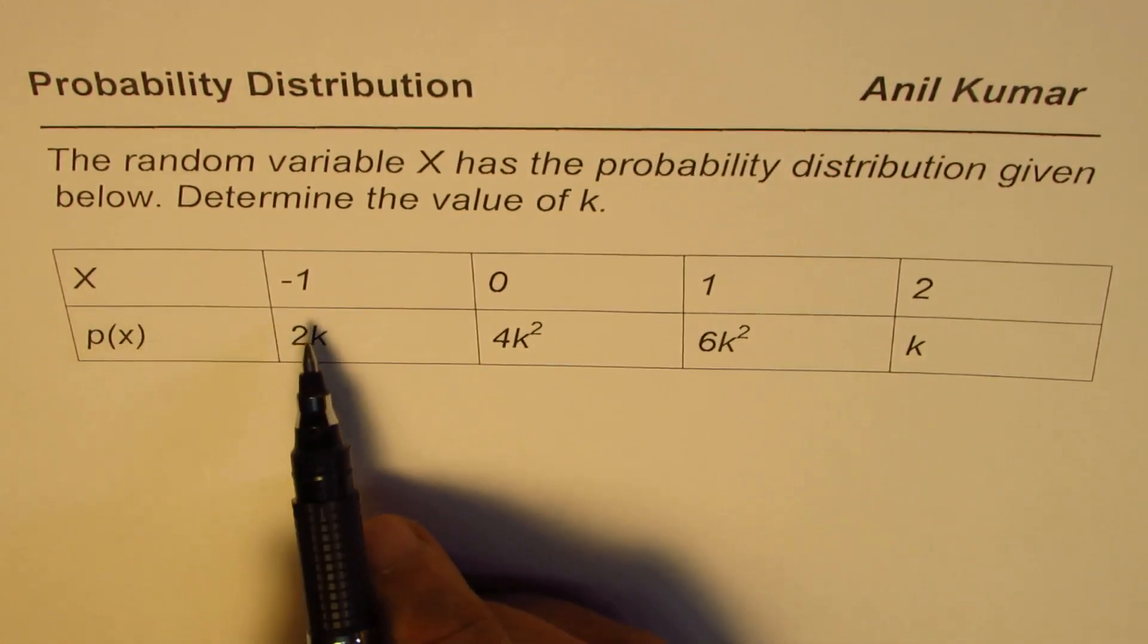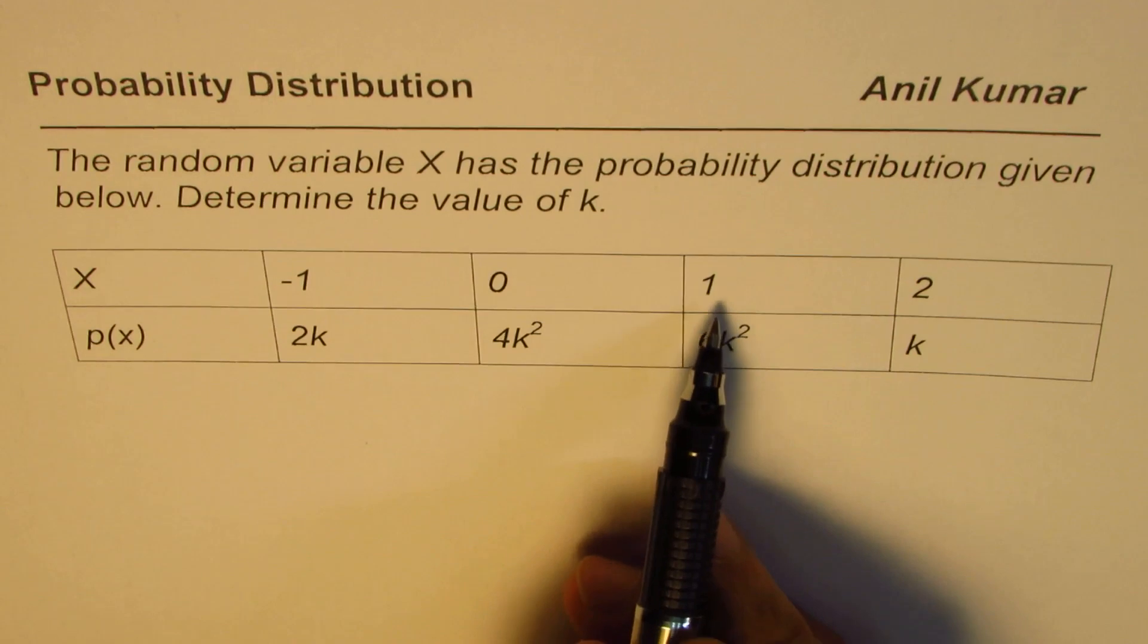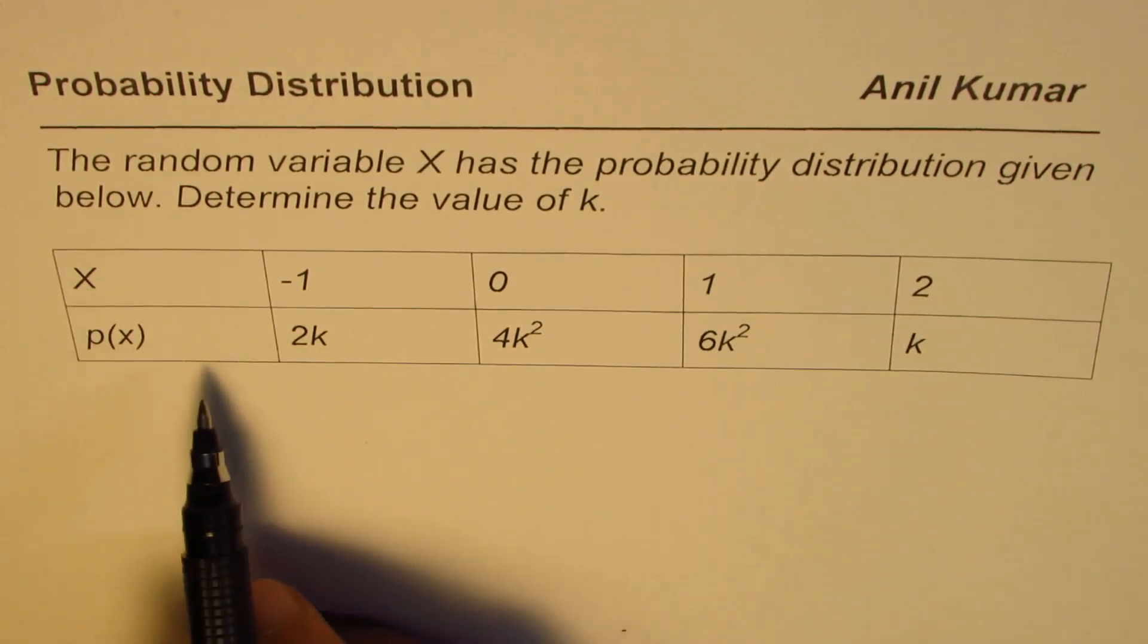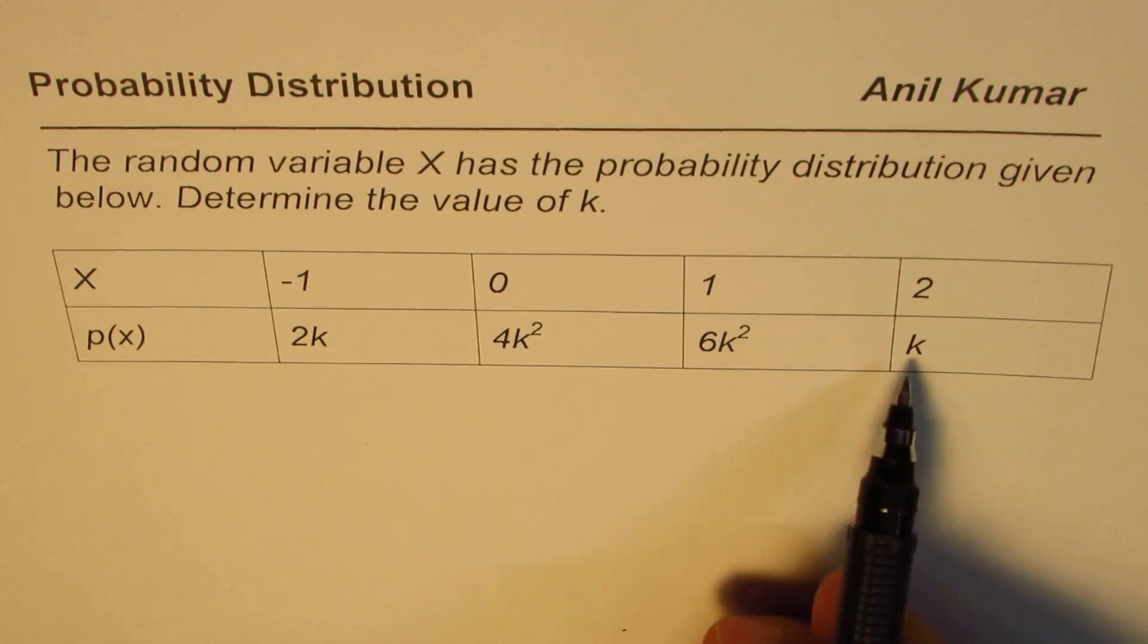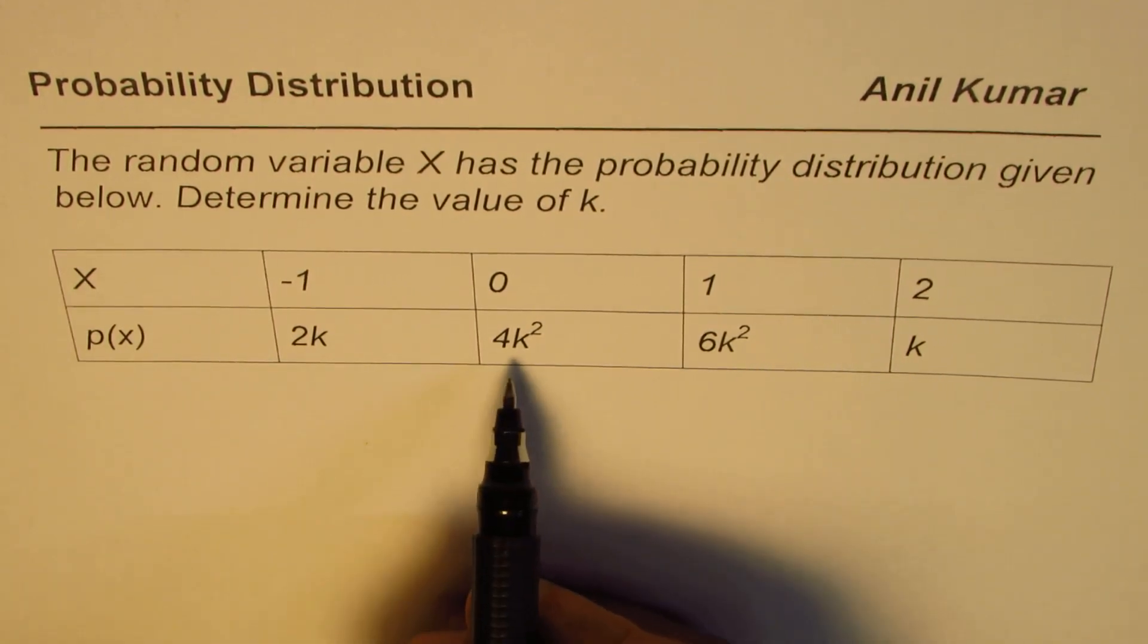The random variable can take the values minus 1, 0, 1, and 2 with the probabilities as 2k, 4k square, 6k square, and k. You need to find the value of k.